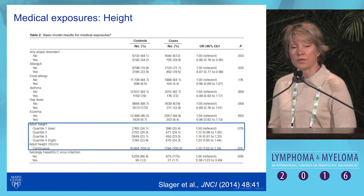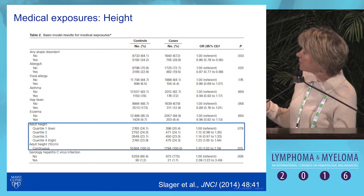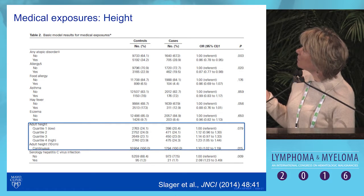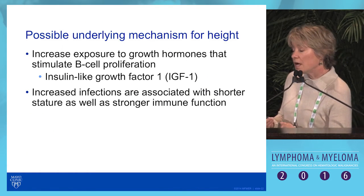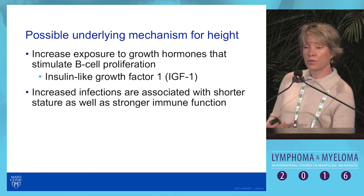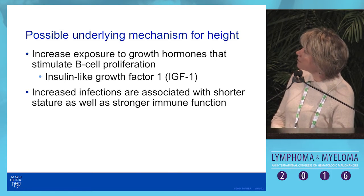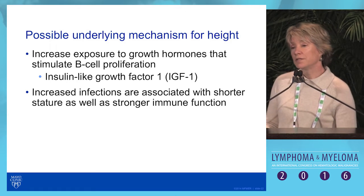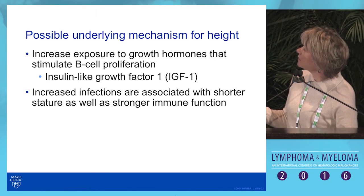Height has been consistently shown to be associated with CLL risk. In our Interlymph study, we see increased risk of CLL with greater height. The biological concept is that taller individuals may have increased exposure to growth hormones — such as insulin-like growth factor 1 — that stimulate B cell proliferation. Another hypothesis is that increased infections, associated with shorter stature, produce a stronger immune system that protects against NHL and CLL.